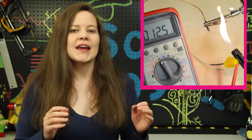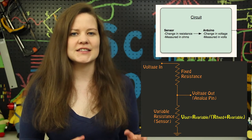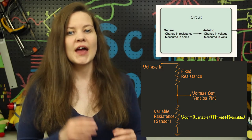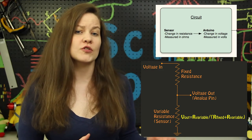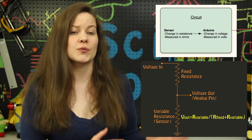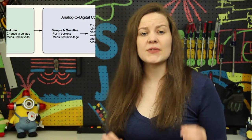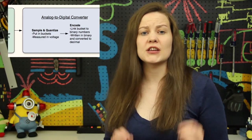A stimulus happens in the real world — like shining a light on a photoresistor, heating up a temperature sensor, or pushing down on a pressure sensor — and this is going to change the electrical property of the sensor. In each of these cases, it's going to change the resistance of the sensor, and this change in resistance is also going to alter the voltage across your circuit. Now let's turn this voltage value into something that the computer can use.